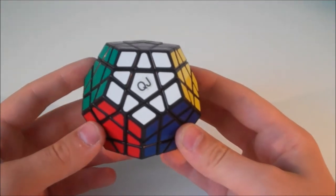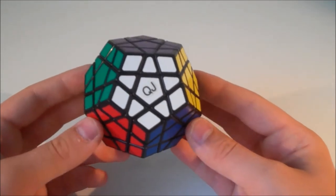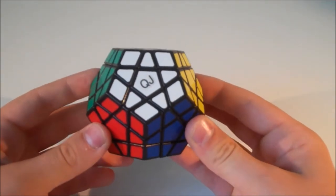The stickers on this puzzle are really nice. The cube is a dodecahedron, so it has 12 faces and therefore 12 different shades.